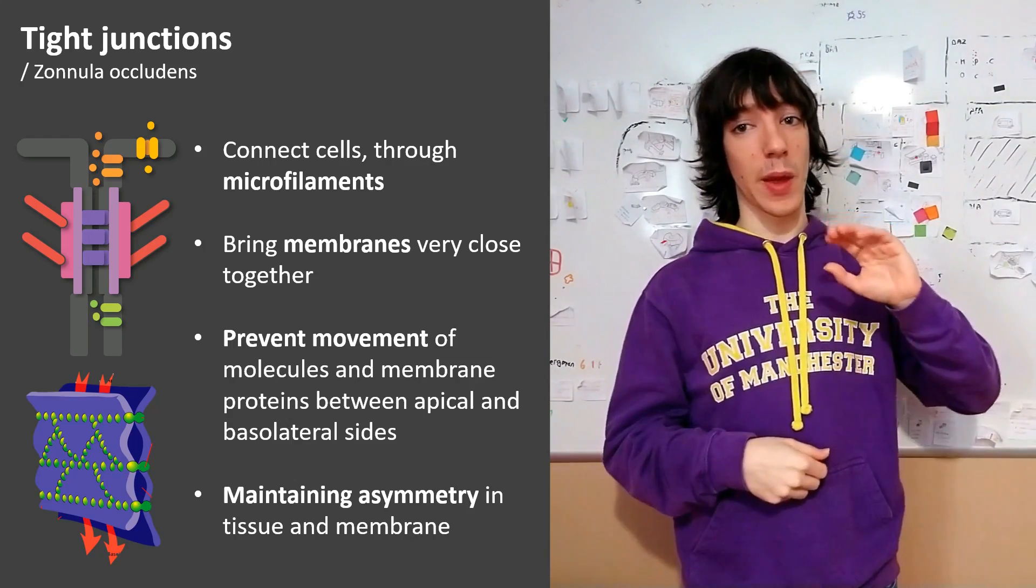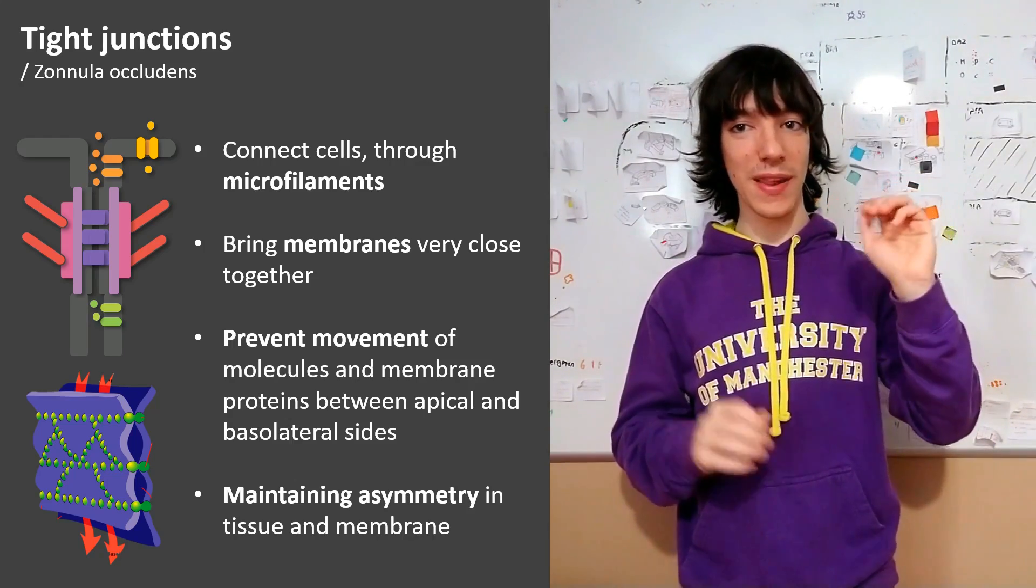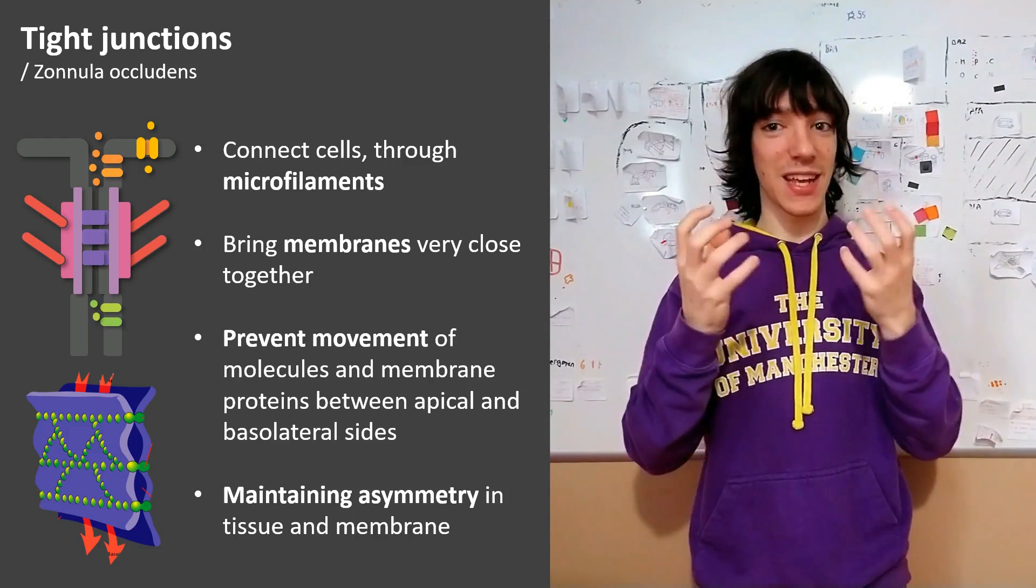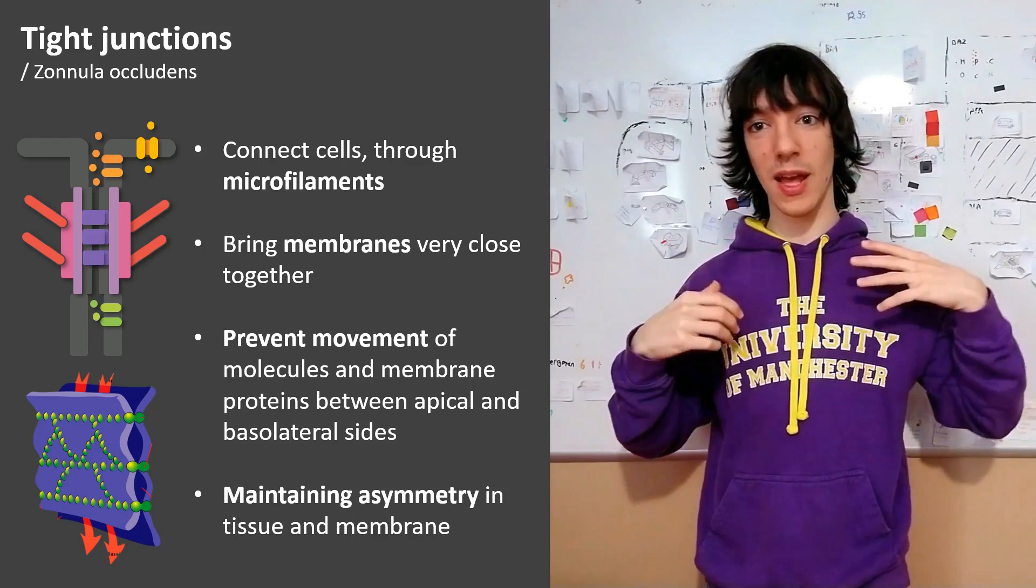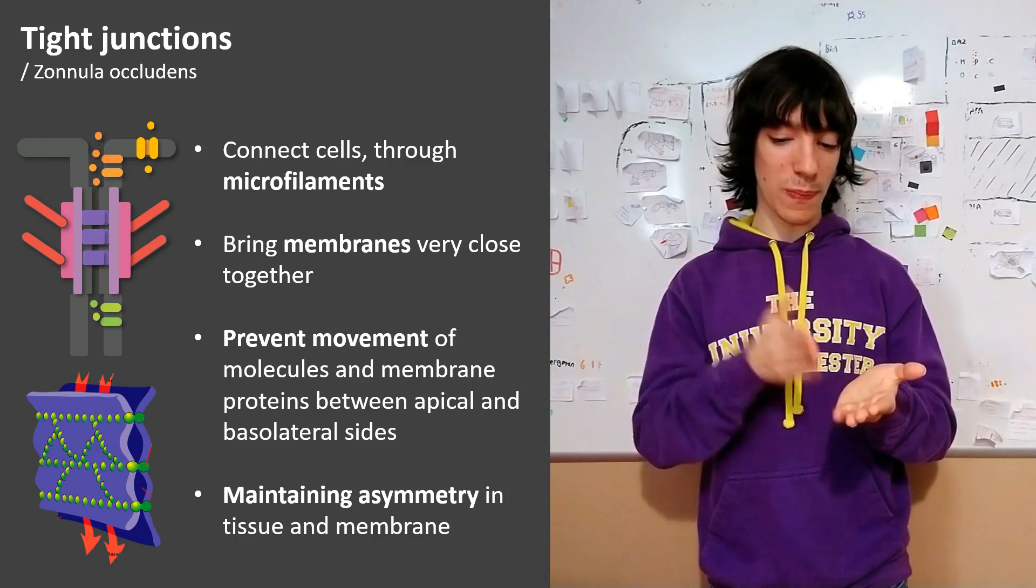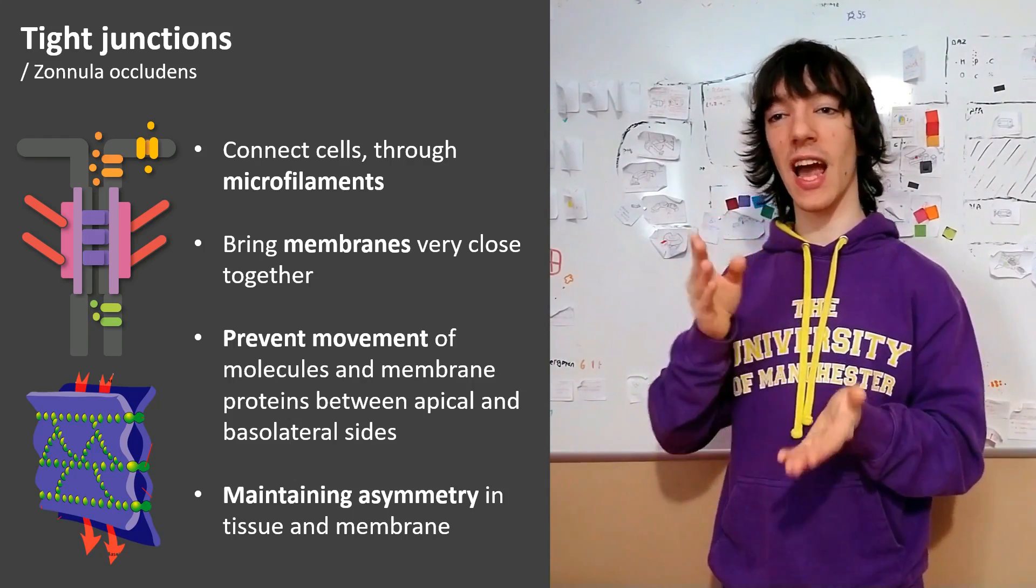For example, the apical side would be looking to the lumen, the interior of the intestine, taking nutrients up. And the basal side would be looking to the capillaries, for example, to pass them the nutrients that they had captured.